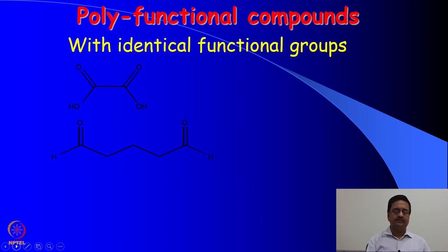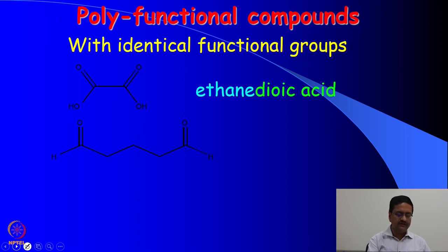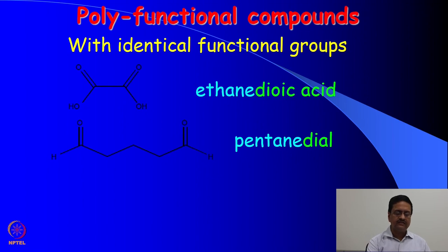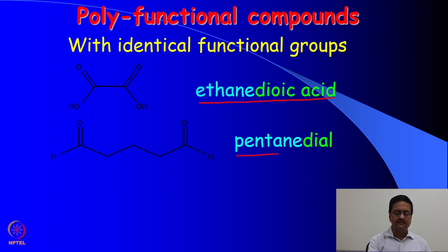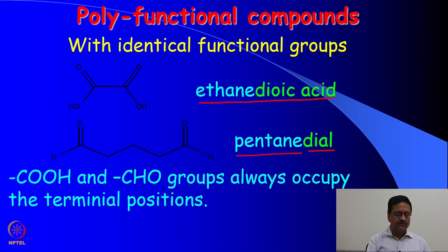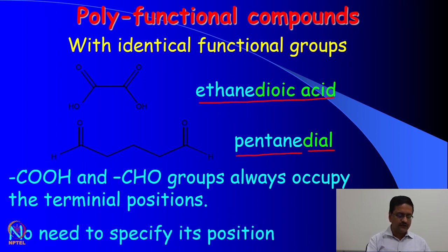There are many organic compounds that have more than one functional group, which may be the same or different, and they should be named accordingly. Here we have a dicarboxylic acid commonly known as oxalic acid — its IUPAC name would be ethanedioic acid. The second compound has a 5-carbon chain named pentane with two aldehyde groups at the two terminals, so we write it as pentanedial. CO₂H and CHO groups always occupy the terminal position, so we do not need to specify their position when writing their names.